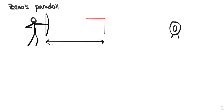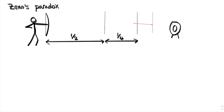Once it's halfway, it has half the distance remaining. But in order to traverse this remaining distance, it has to travel half of that. So half of a half is a quarter, so it travels a quarter of the distance further. And there's a quarter of the distance that still remains. In order to cover that distance, it has to travel half of it first — so it has to travel one eighth of the distance towards the target.